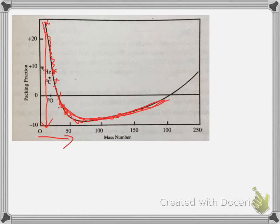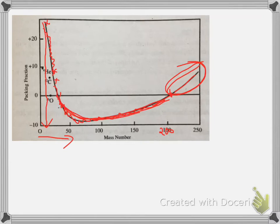Beyond mass number 200, the packing fraction again touches zero and goes positive. Elements like uranium, thorium, neptunium, and plutonium are all radioactive due to this instability — they are genuinely unstable in that region. Elements with mass numbers from around 50–60 up to about 200 are found to be stable. This is the concept of packing fraction.